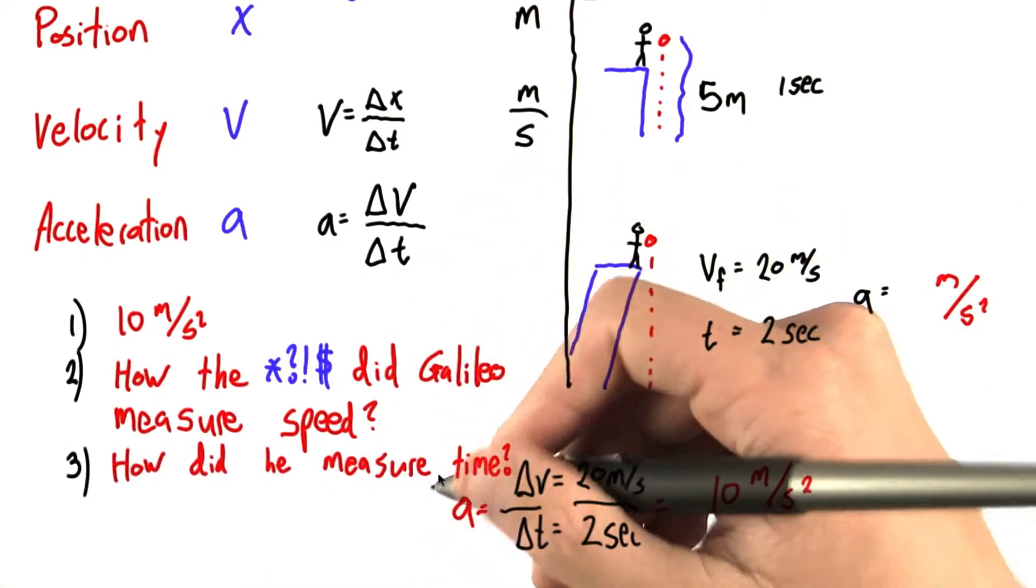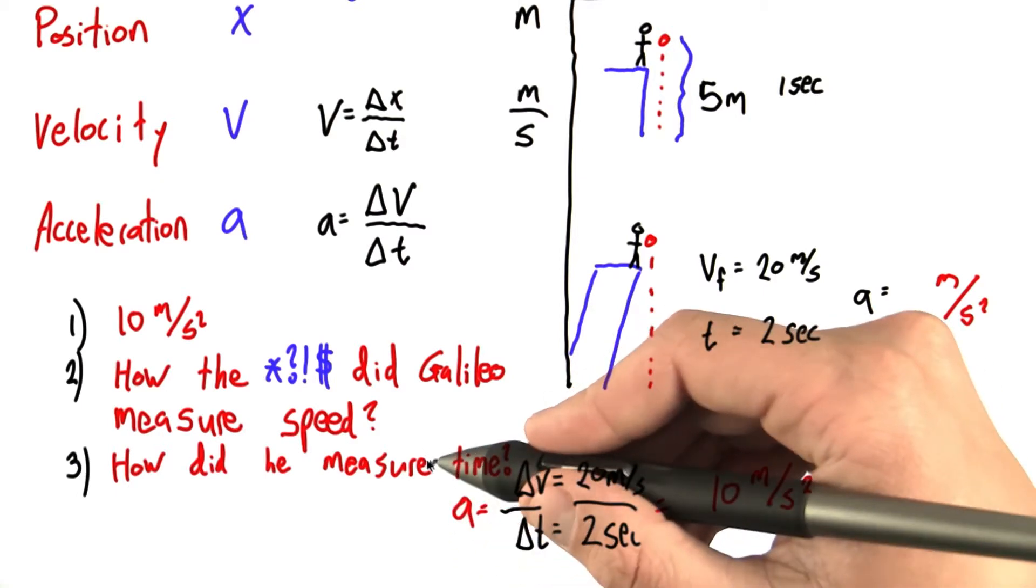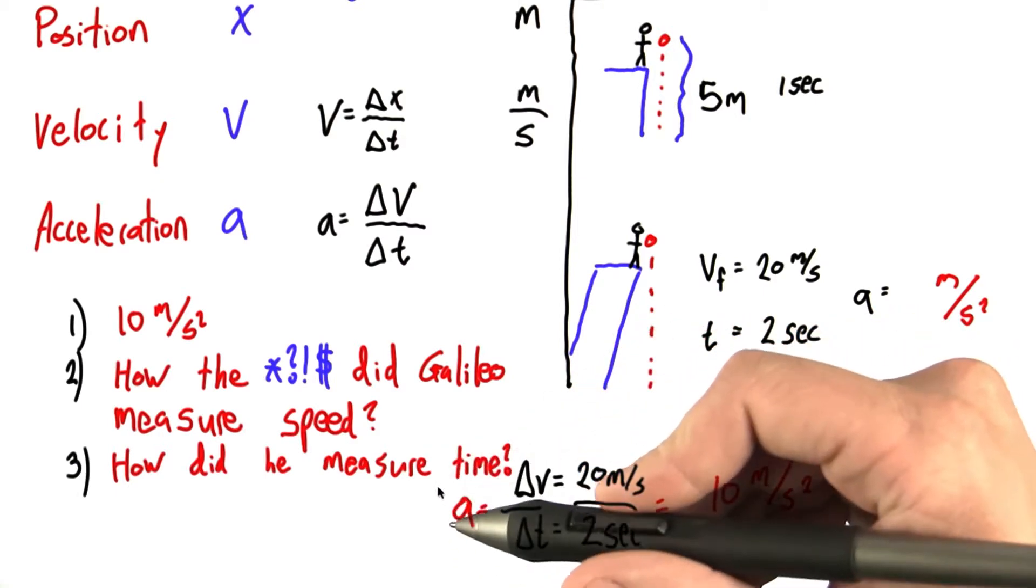The third answer you may have given is how did he measure time? Galileo didn't have any stopwatches or fancy chronometers in his day.